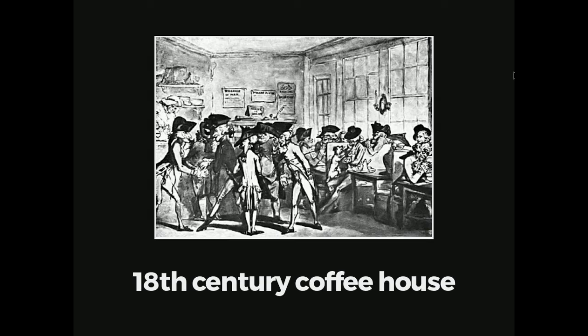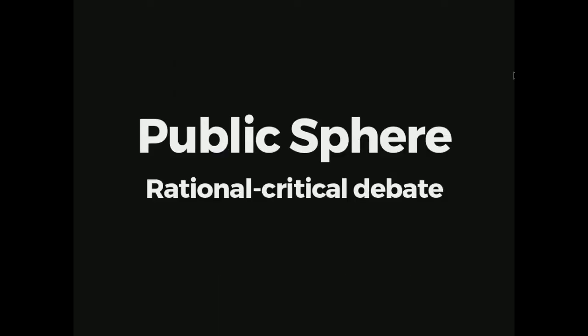One way to understand the public sphere is to think about an 18th-century coffee house, because in Habermas' theory the public sphere was actually a place. In England it was a coffee house; in France, a salon; in Germany, a Tischgesellschaften. These were different physical locations where people would get together and debate ideas. They would read the same journals, come in with ideas, and debate. The debates were rational and critical — people offering analytical ideas about specific subjects.